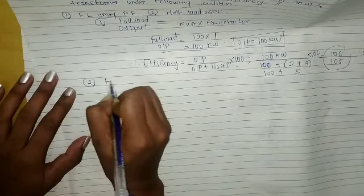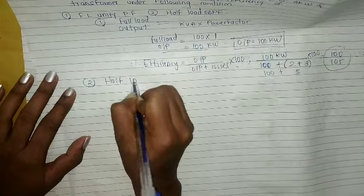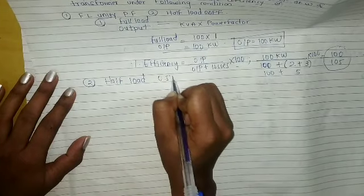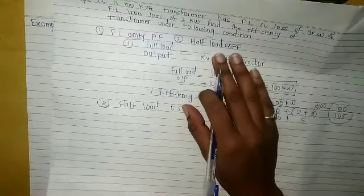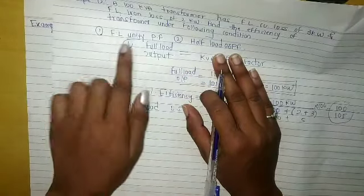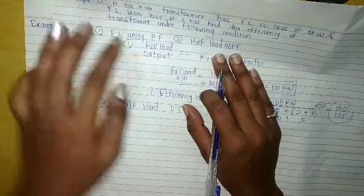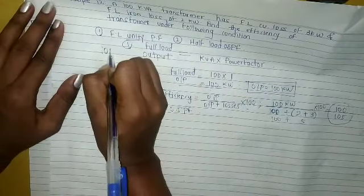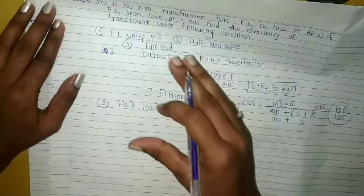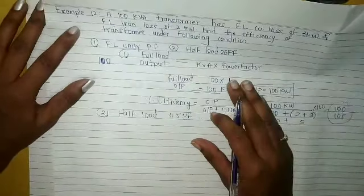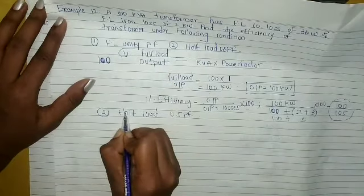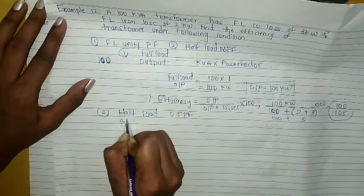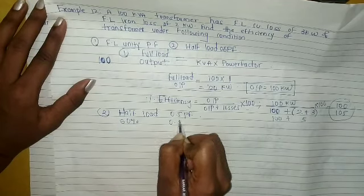Now the second condition: half load at 0.5 power factor. In the first case we calculated full load efficiency at unity power factor — full load means we are giving 100%, the maximum capacity. Half load means 50% of the maximum load at 0.5 power factor.